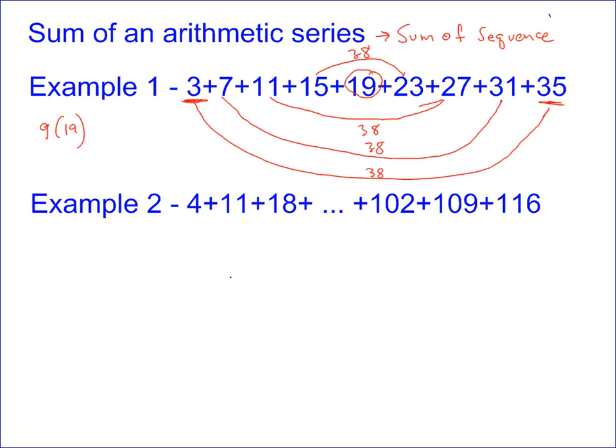So 9 times 19 is just going to give you 171. The sum of that sequence is 171.